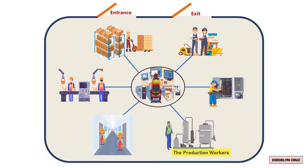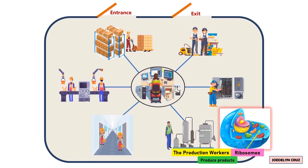The production workers who produce products are the same as ribosomes. Ribosomes, which look like dots within the cell, also produce products — which are proteins.